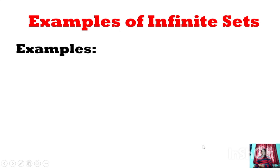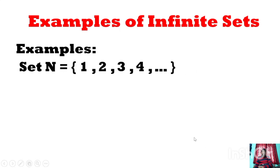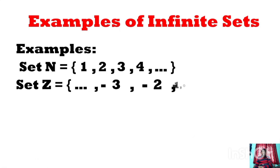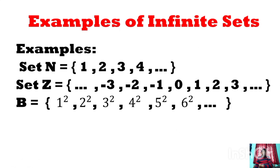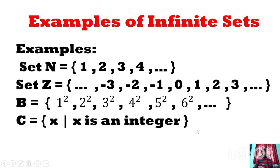Another example of an infinite set: the set N = {1, 2, 3, 4, ...} is an infinite set. The set of integers is also an infinite set. Another set V is also an infinite set, because we cannot determine the number of elements — they have an infinite number of elements. The counting process will never come to an end; we cannot say how many elements the set has. Here, set C = {X : X is an integer} is also an infinite set.